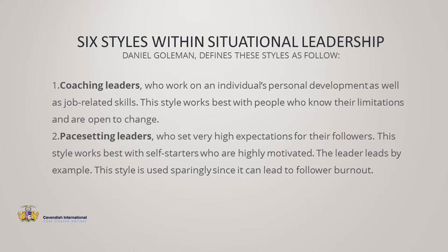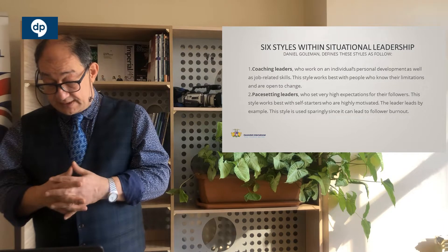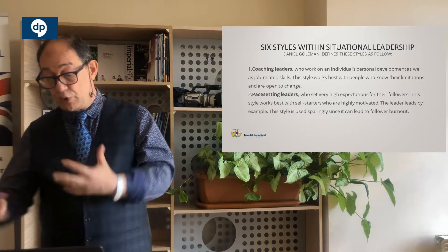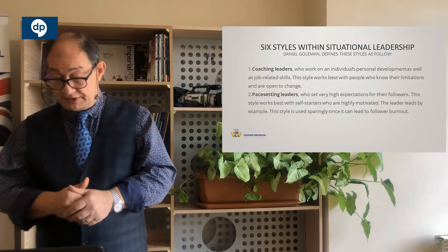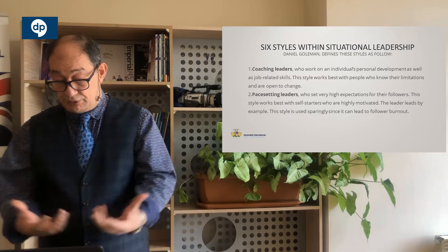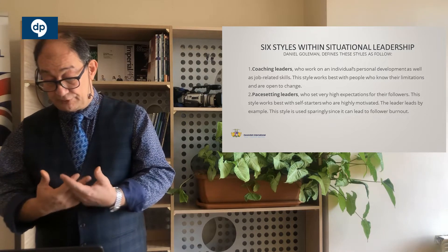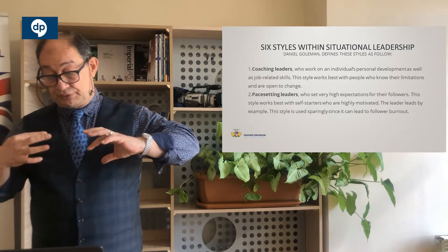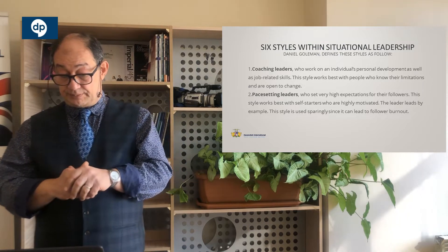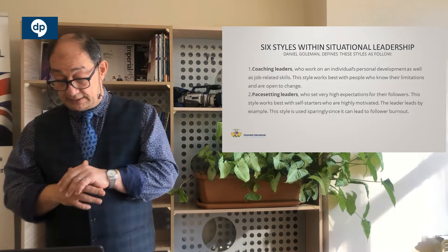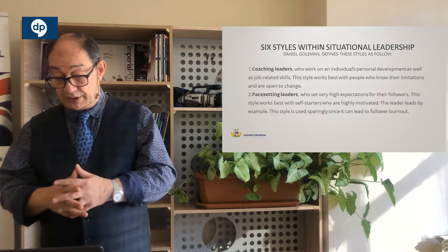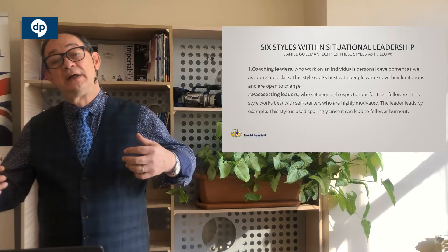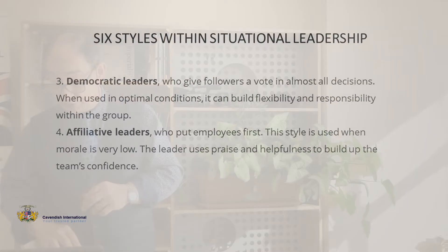The six styles within situational leadership, which Daniel Goleman suggested and defined, start with coaching leaders. As it suggests, these are leaders which work with their team, they coach them, build their skills and develop the team members into their task and job. Then you have the pace-setting leaders — they break down the project into sections which can be delivered and give it to the team. This style works best with self-starters: if your team is highly motivated and takes high initiative, you just need to pace them and get them through the job.